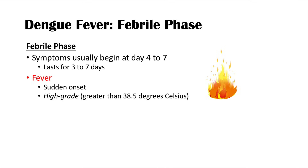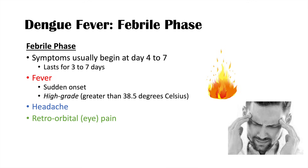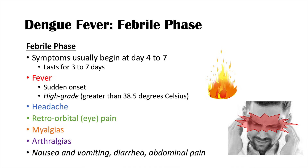Other common symptoms include headache and retroorbital eye pain — pain behind the eyes. This is a key phrase: if you hear fever, headache, returned traveler, and retroorbital pain, think dengue fever. Patients can also have myalgias or muscle pain and arthralgias or joint pain, as well as gastrointestinal symptoms like nausea, vomiting, diarrhea, and abdominal pain.